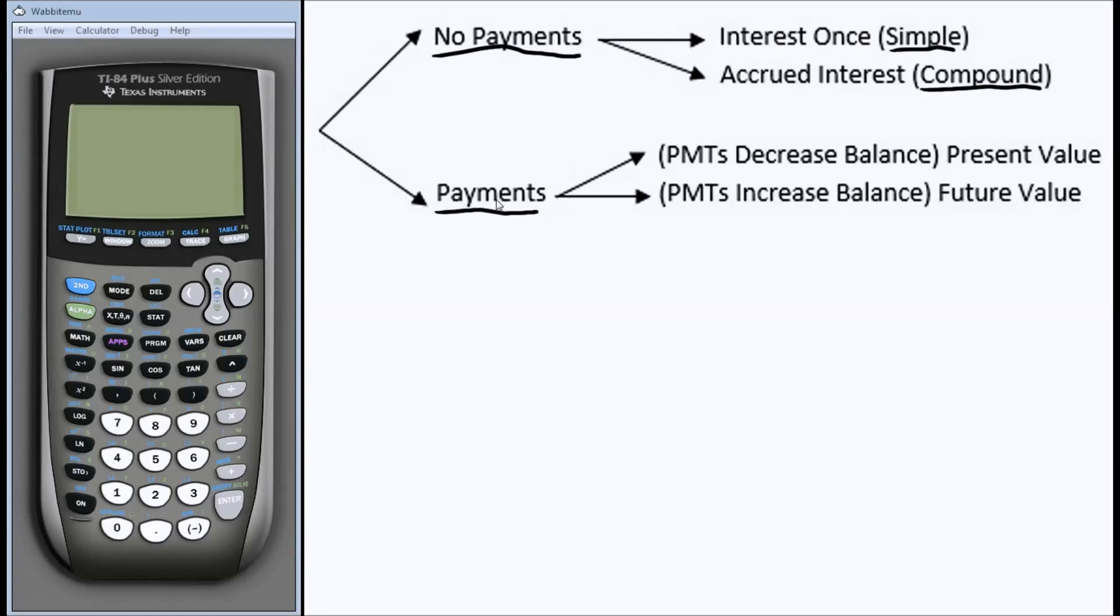If our problem is one where we have multiple reoccurring payments, we first need to ask ourselves, what is the payment doing to our balance? If we have a payment that decreases the balance after we've made the payment, we're dealing with a present value problem. An example of that might be where I have a loan, and when I make a payment to pay off that loan, the balance at the end of that payment is now lower as I'm paying that loan off.